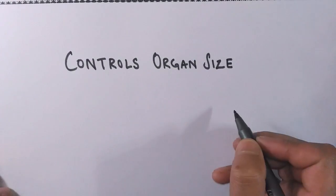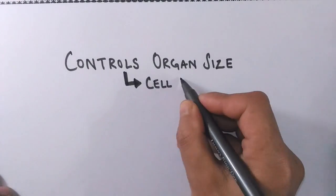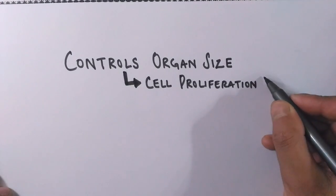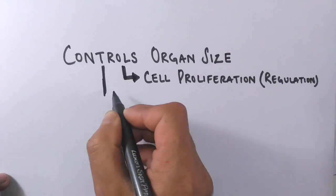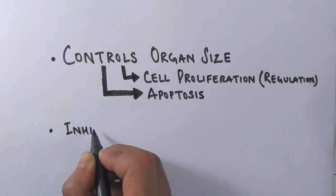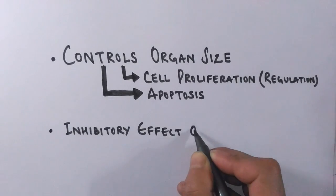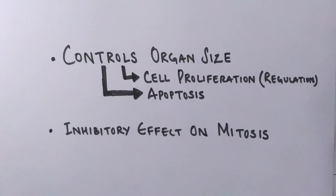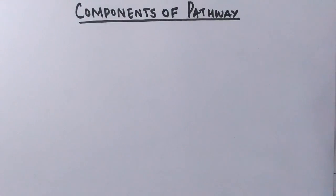It controls organ size through different processes like cell proliferation and apoptosis. Controlling organ size means controlling mitosis because the organ grows by mitosis. The Hippo pathway halts mitosis by halting the production of cyclin proteins needed for mitosis stage.